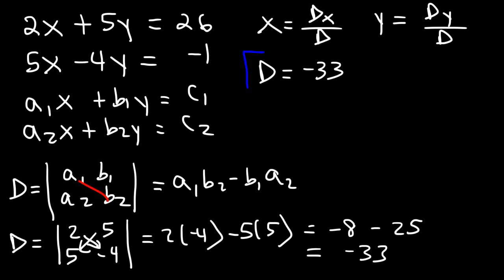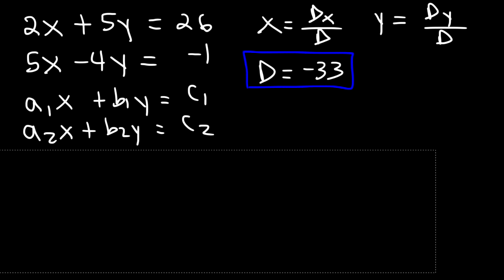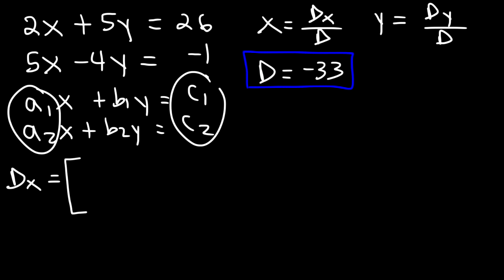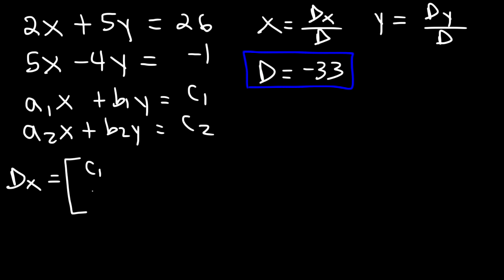Let's save that answer because we're going to use it later. Now let's calculate dx. For dx it's a 2x2 matrix, but we don't use the coefficients of x — we replace them with c1 and c2. So the elements of matrix dx are c1, c2, b1, b2, and the determinant is c1 times b2 minus b1 times c2.